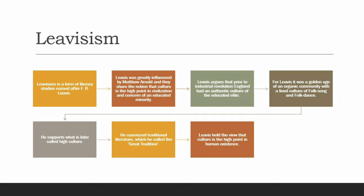Arnold's often-quoted phrase — 'culture is the best which has been thought and said' — comes from the preface to Culture and Anarchy. The book contains key terms like high culture, sweetness and light, barbarian, philistine, Hebraism, and so on. Leavis held the view that culture is the high point of human existence, thus supporting what is later called high culture. High culture most commonly refers to the set of cultural products — mainly in the arts — held in the highest esteem; it is stereotypically seen as not accessible to the masses, but as the culture of the refined and wealthy.